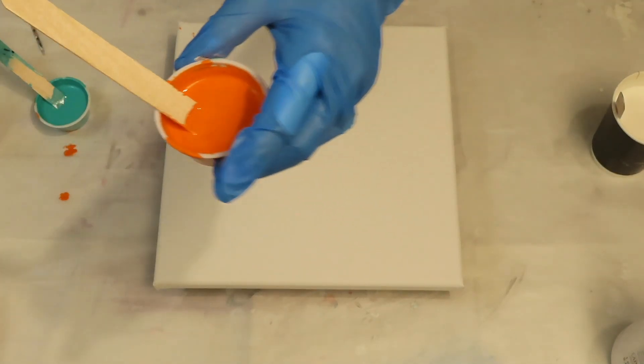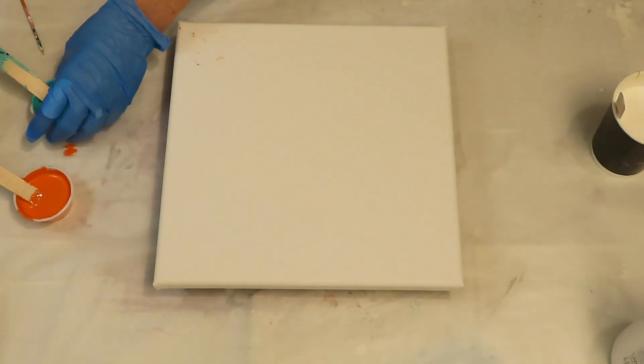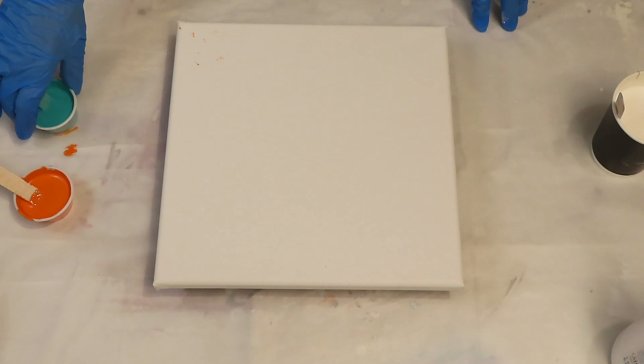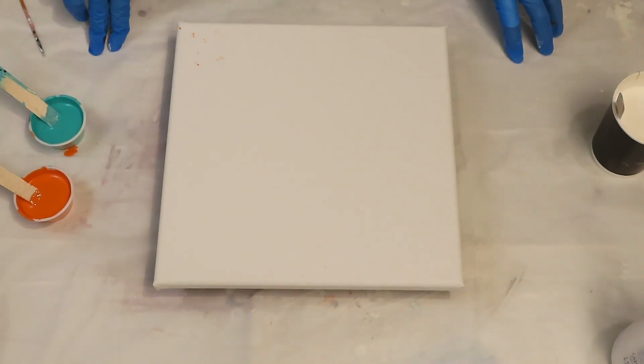So on this mixture, I put the paint, I didn't really measure exactly, but approximately one part paint, to one part Liquitex pouring medium, to about a quarter part Floetrol, and then water.